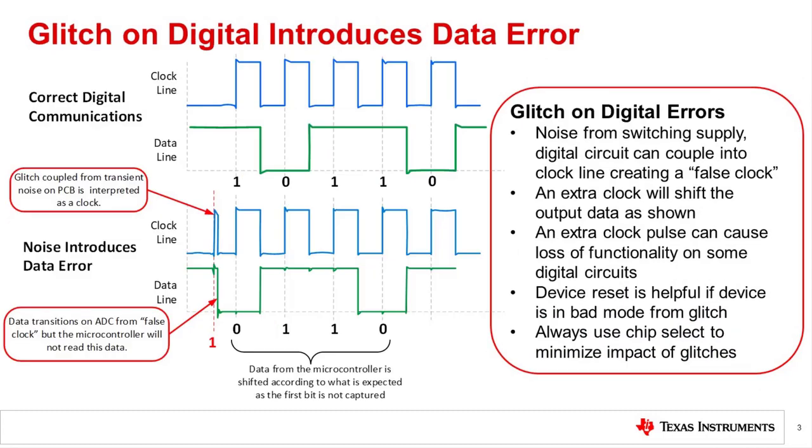This slide shows an example of a data integrity issue where a transient introduces a glitch in the clock line. This kind of issue is especially problematic as the extra clock introduced by the glitch throws the device internal state machine out of sequence. The extra clocking issue will typically have the effect of shifting all the data to the left.